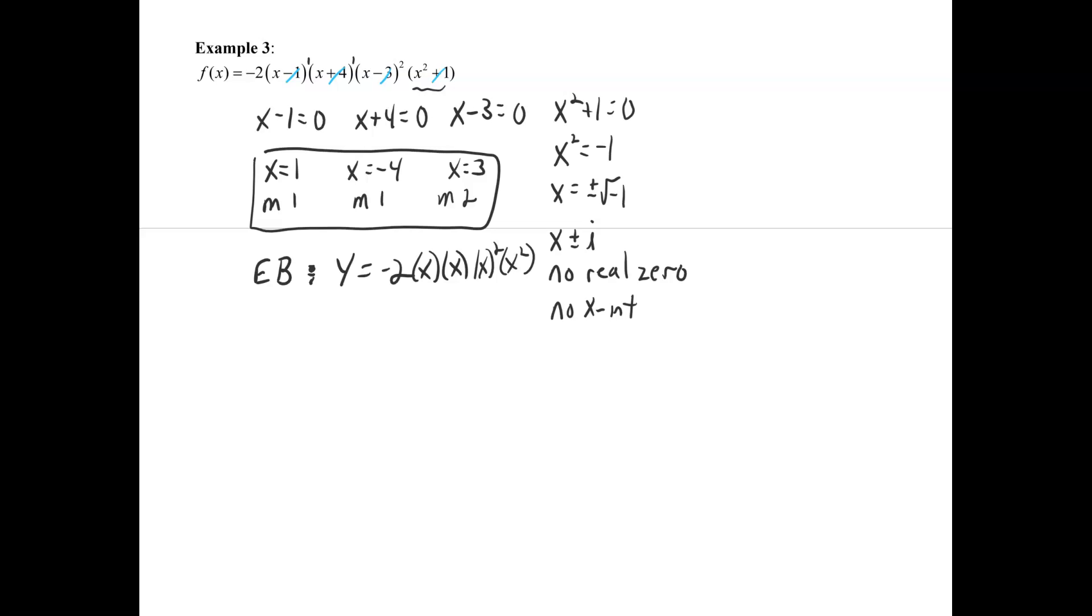And then that other x does matter. Even though it didn't give us any zeros, it's still part of the end behavior model, so we still want to include that. So we get y equals negative 2x to the 1, 2, 3, 4, 5, 6. That's our model.